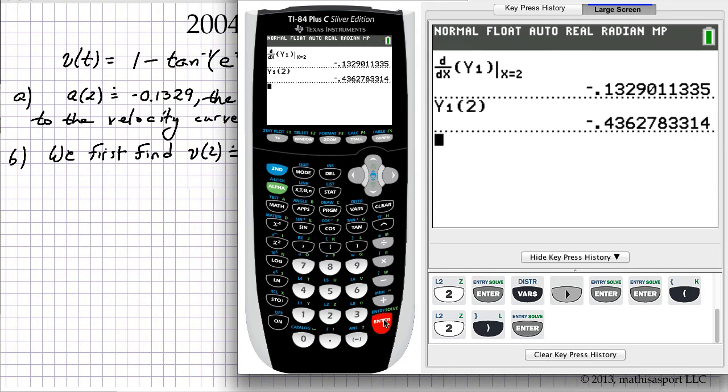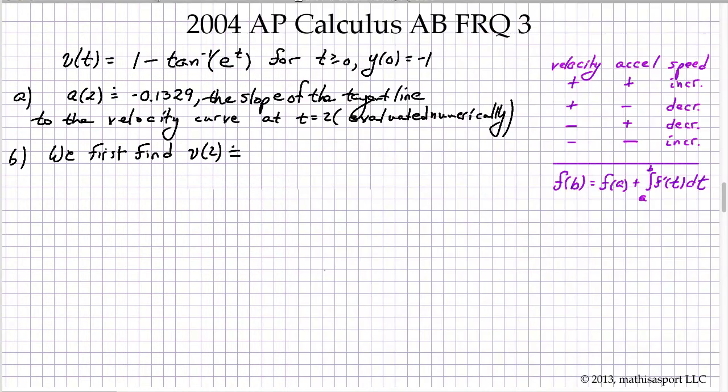So it simply needs to be evaluated at time t equals 2. And I get negative 0.4362.